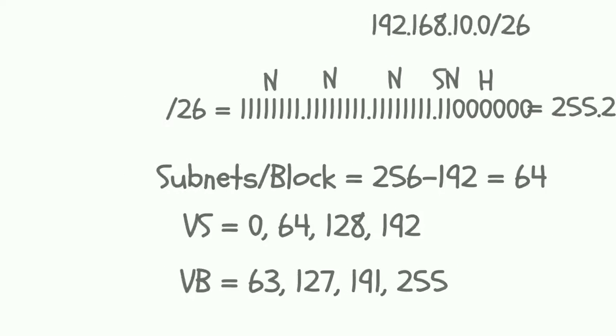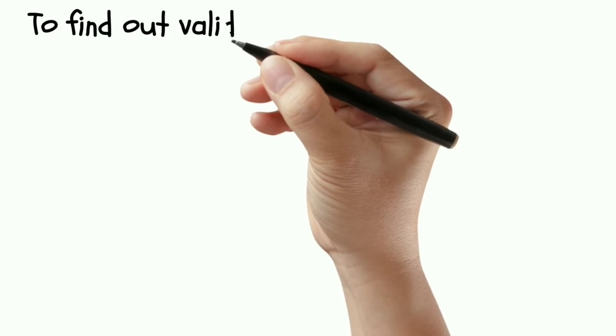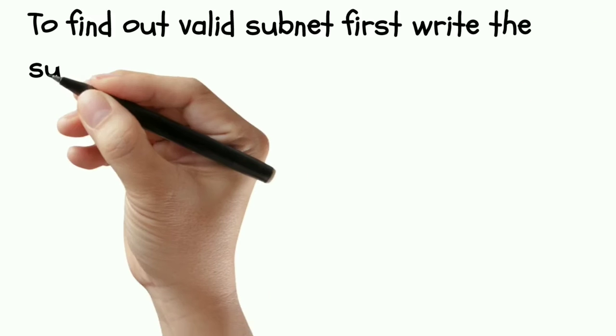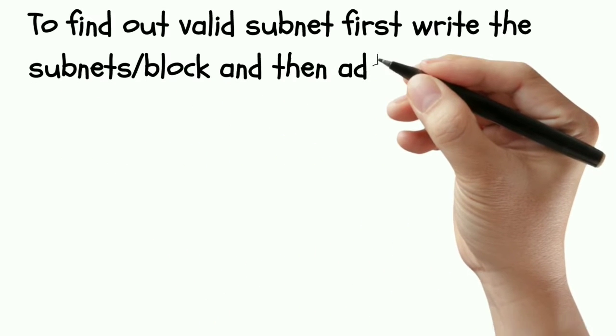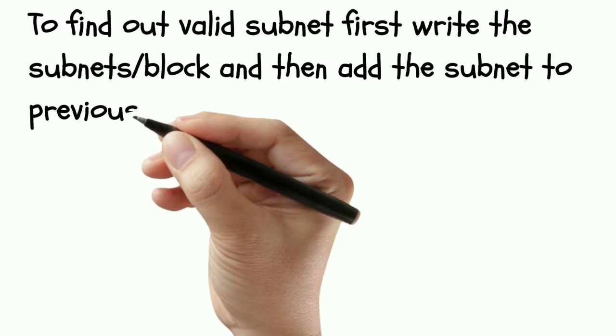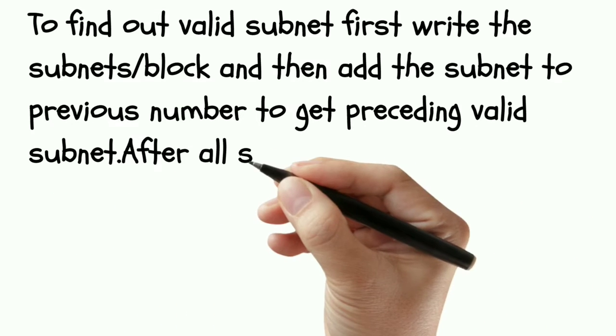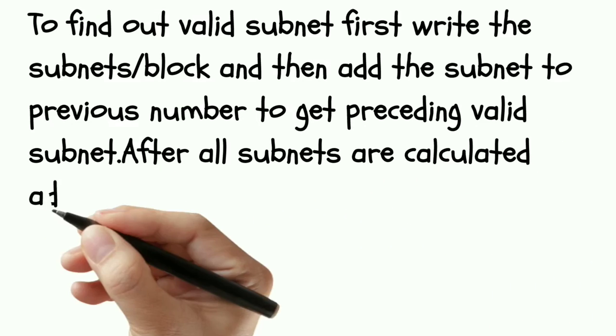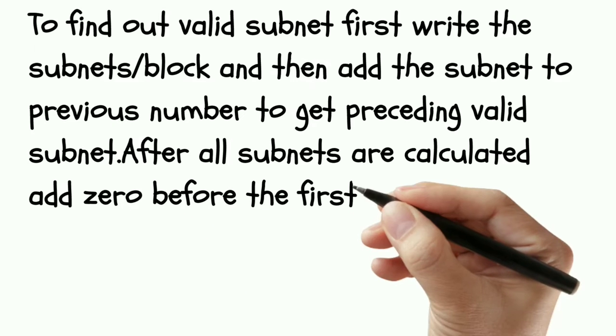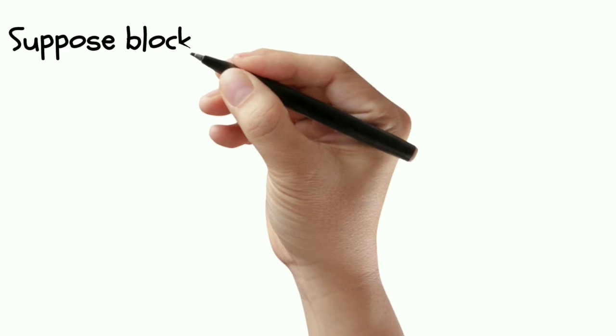To find out a valid subnet, first write the subnets or block and then add the subnet to the previous number to get the preceding valid subnet. After all subnets are calculated, add zero before the first number. Let's understand with an example.